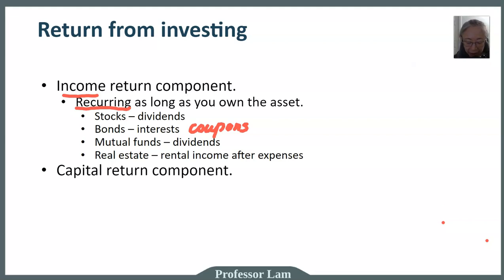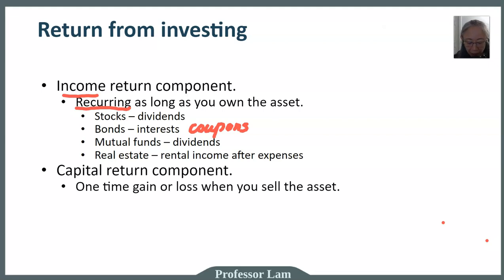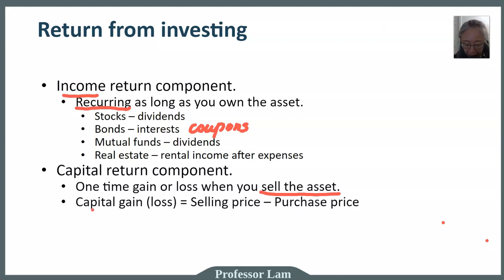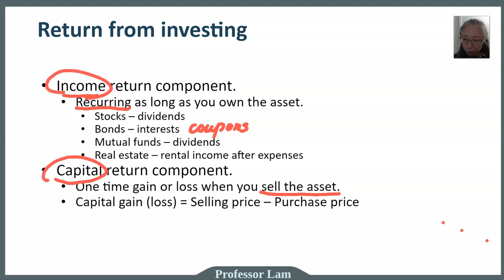In contrast, you also get a capital component. The capital return component is the capital gain or loss — this is a one-time gain or loss when you sell the asset. Once you realize the capital gain or loss, you no longer own the asset. Capital gain or loss equals the selling price minus the purchase price. The two together — the capital component and the income component — represent your total return.